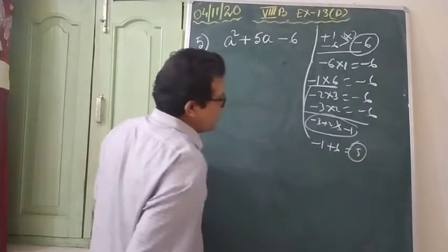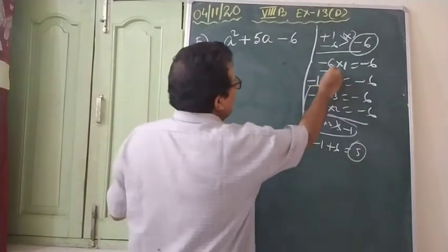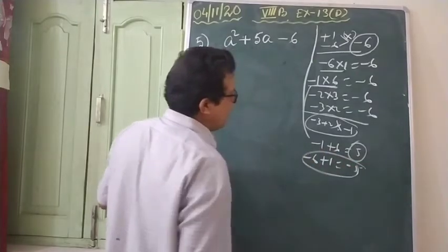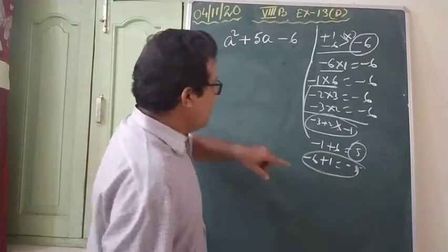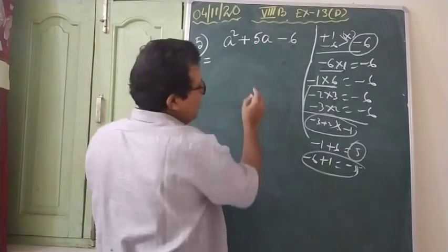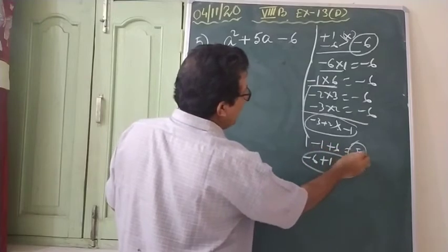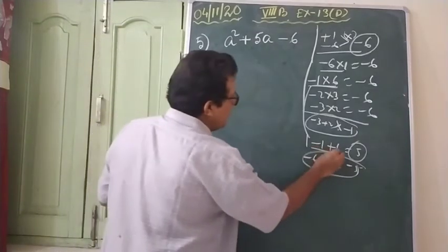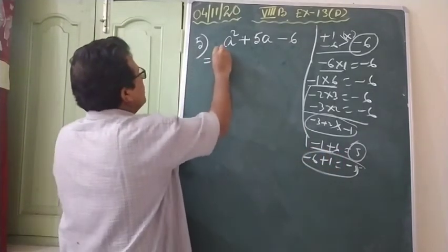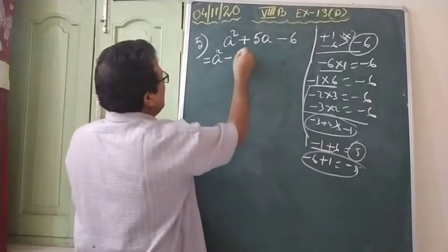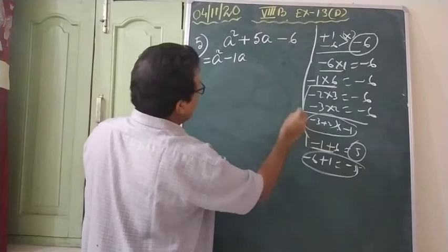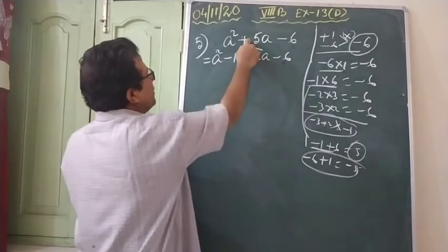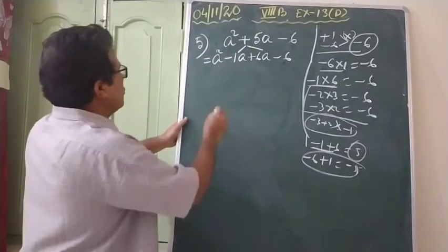Looking at the factors, adding minus 1 and 6 gives plus 5 — yes! And minus 6 plus 1 gives minus 5, so we cannot take that. The factor pair that gives plus 5 is minus 1 and plus 6. In our question, 5 is required. So with minus 1 × 6 = minus 6, we can bring plus 5. So you write: a² minus 1a + 6a minus 6. If you do the addition, you will get plus 5, so our breaking is correct.